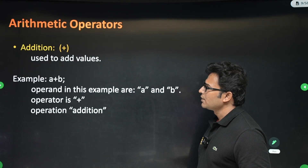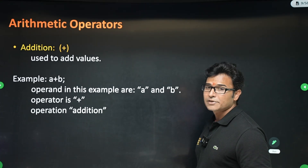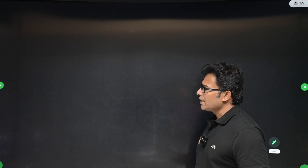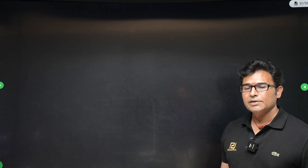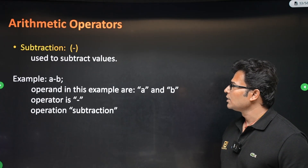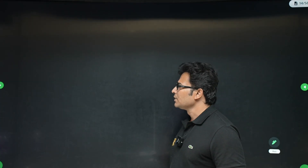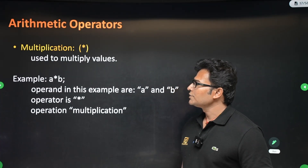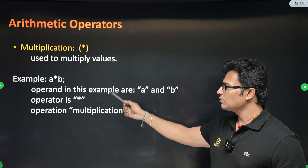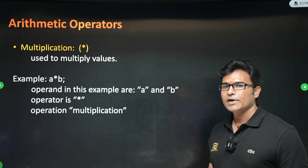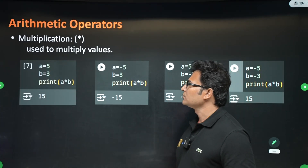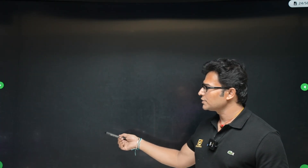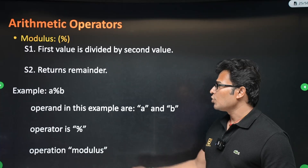For addition, a plus b gives the result — for example, a equals 5, b equals 7, so a plus b is 12. Subtraction: a equals 5, b equals 3, a minus b is 2. Multiplication: a equals 5, b equals 3, a star b equals 15. Division: 6 divided by 3 equals 2. Don't stress too much on these basic operators.